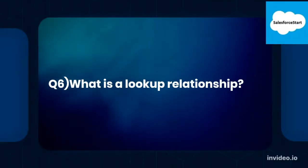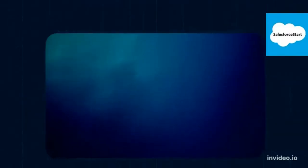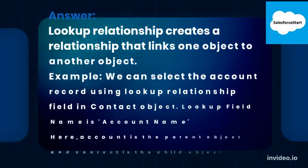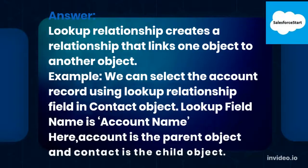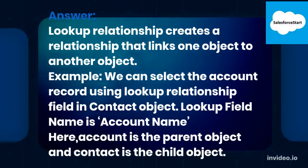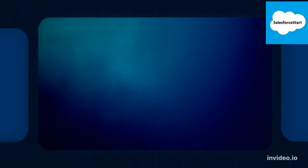Q6: What is a lookup relationship? A lookup relationship creates a relationship that links one object to another object. For example, we can select an account record using a lookup relationship field in the Contact object. The lookup field name here is Account Name — Account is the parent object and Contact is the child object.